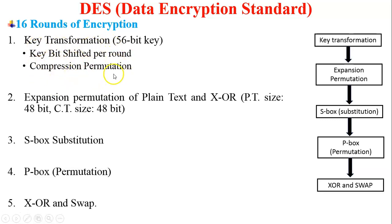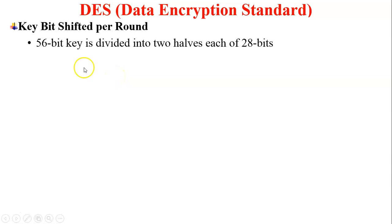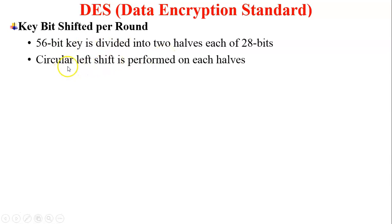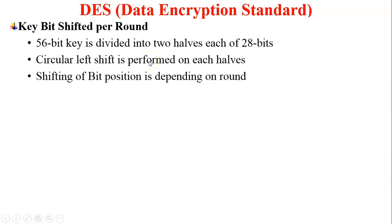First, key transformation. We have a 56-bit key from the key discarding process. This 56-bit key is divided into two halves, each of 28 bits — so 28 plus 28 equals 56 bits. Circular left shift is performed on each half. The shifting of bit positions depends on the round — how many bits to shift left depends on which of the 16 rounds is being performed.